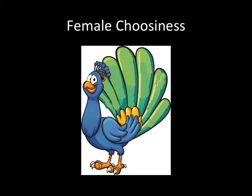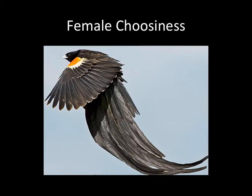Another example is the African-tailed widow bird, which has ridiculously long tails that make flying hard and make them cumbersome and slow, attracting predators. Yet females pick males with longer tails. Experiments gave males artificially long tails up to 20 centimeters, and females always chose them. When males' tails were clipped shorter, they were selected against. Female choosiness is really based on how elaborate the display is.